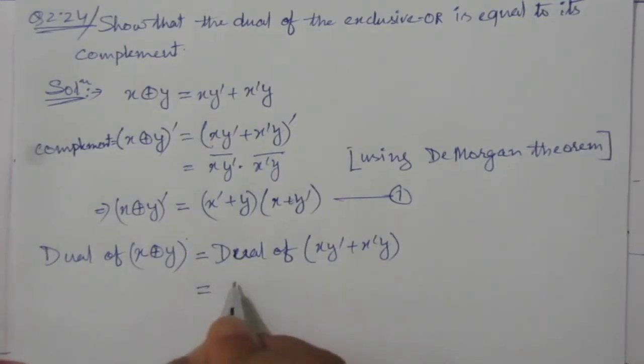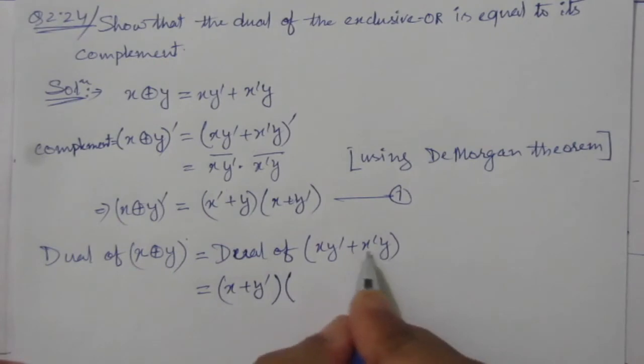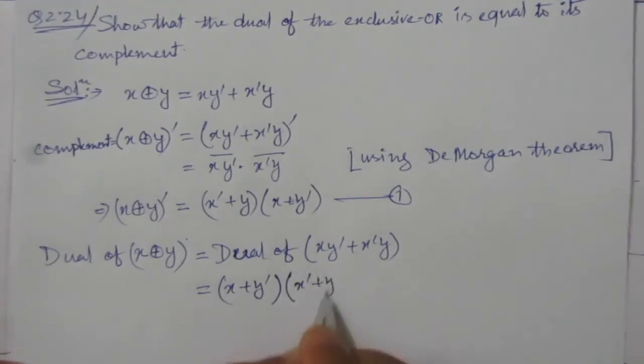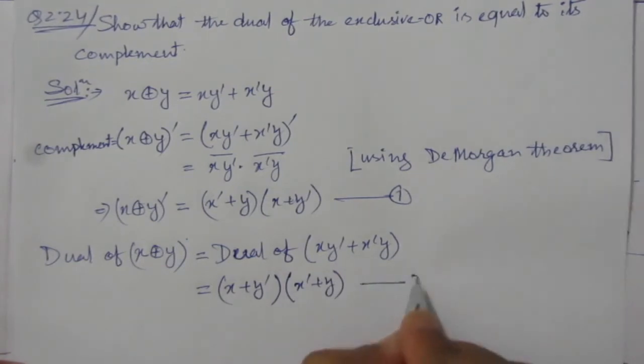So this multiplication becomes x plus y bar. This addition is replaced with multiplication and this multiplication is replaced with addition: x bar plus y. So this is number 2.